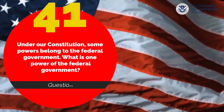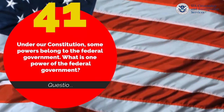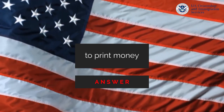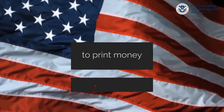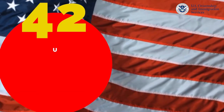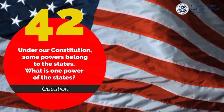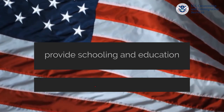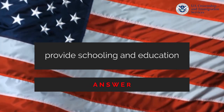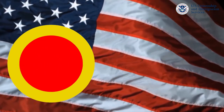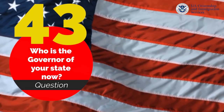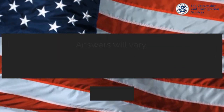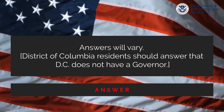Under our Constitution, some power belongs to the federal government. What is one power of the federal government? To print money. Under our Constitution, some power belongs to the states. What is one power of the state? Provide schooling and education. Who is the governor of your state now? Please check your state website for that information.